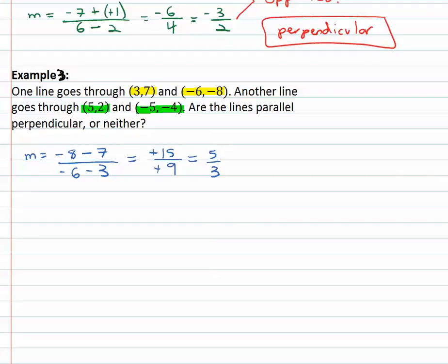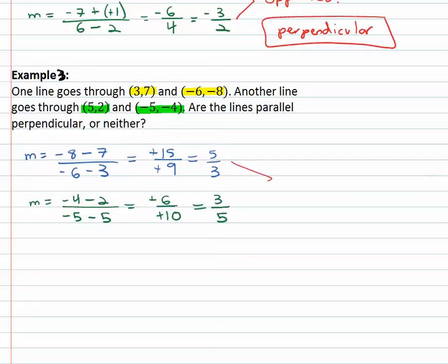The second line goes through (5, 2) and (−5, −4). Slope = y₂ = −4 minus y₁ = 2 over x₂ = −5 minus x₁ = 5. Negative four minus two is negative six; negative five minus five is negative ten. Two negatives make a positive — reducing gives three-fifths. Comparing five-thirds and three-fifths: they are reciprocals, but both are positive. Perpendicular lines need opposite reciprocal slopes — one positive and one negative. Since both are positive, these lines are neither parallel nor perpendicular.